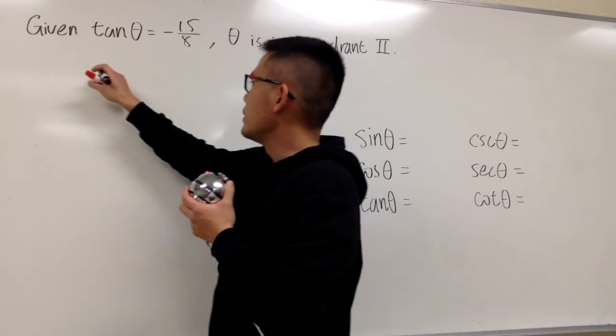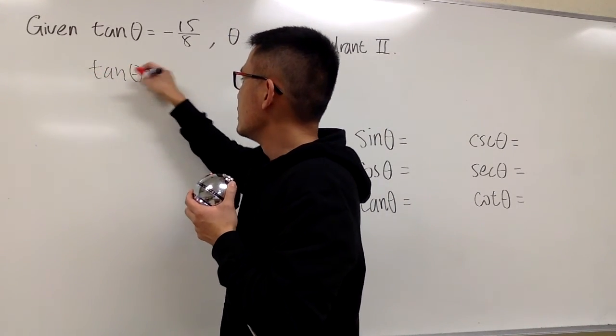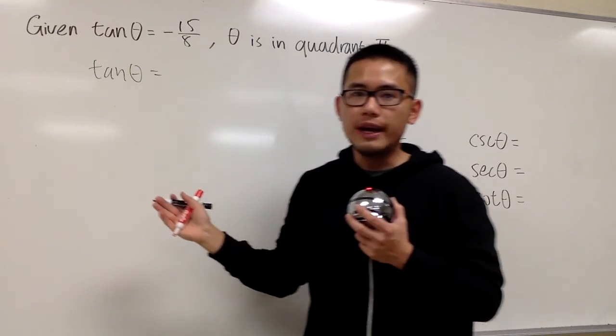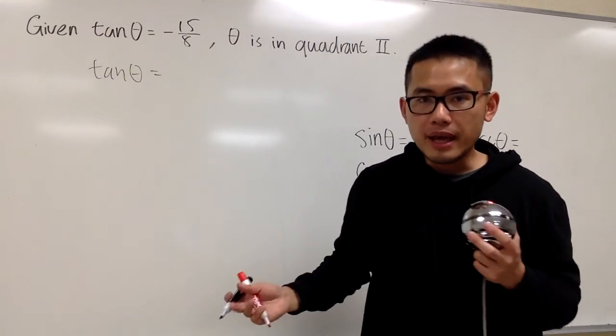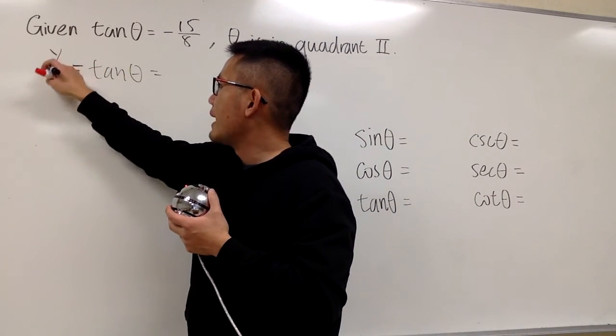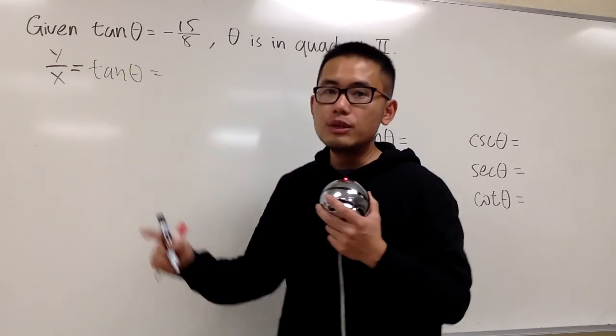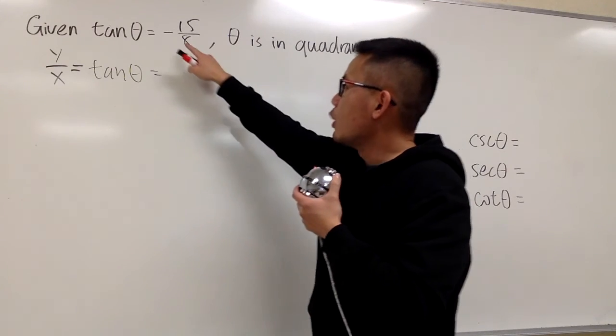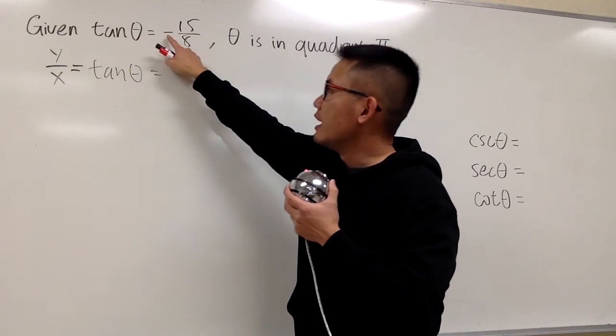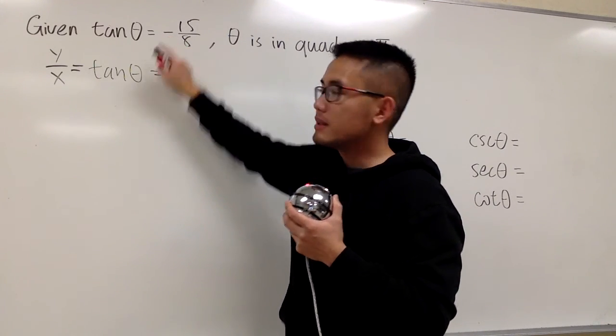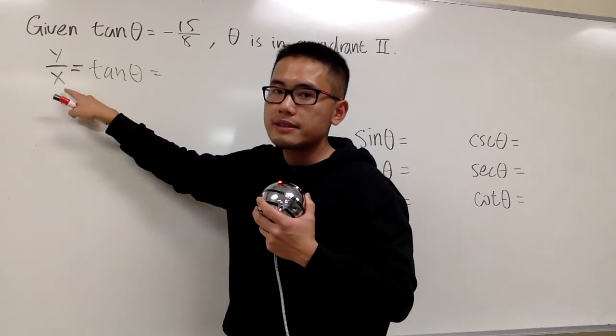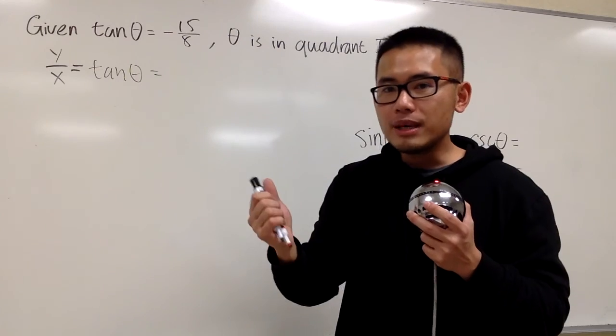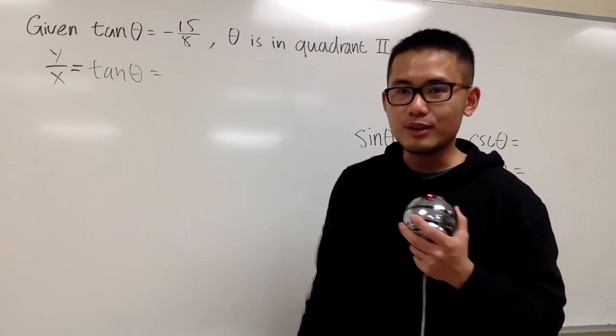Let me write this down again. We know tangent theta is equal to negative 15 over 8. And we know the definition of tangent in the xy-plane. We know that this is the same as saying y over x. And the reason I want to put this down is because, you see, originally the question is written with the negative in the front. Because now, if you look at tangent theta, which is y over x, we know that y can be negative, or maybe x can also be negative.